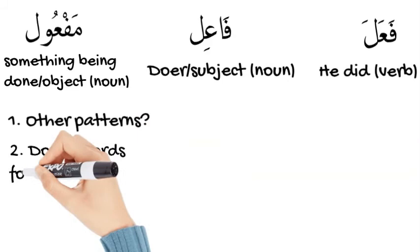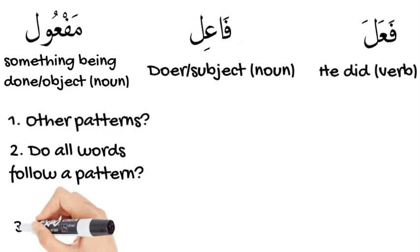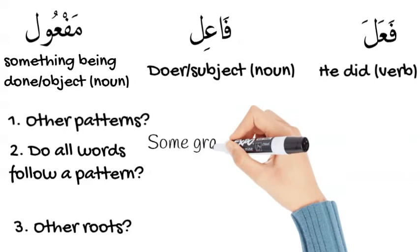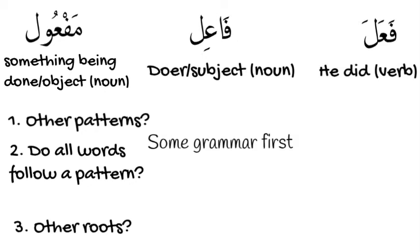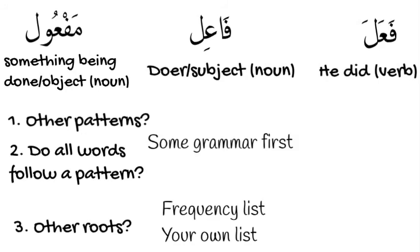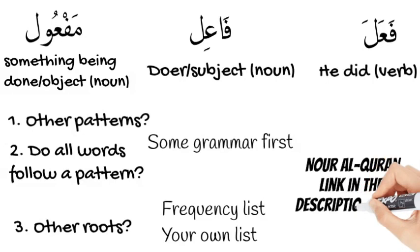The next questions are: what about other patterns in the Quran — how do we learn them? Do all words follow a pattern? What about words made up of only two letters? How do we learn all of these word roots? To answer the first two questions, we need to go over some grammar first, which I will do in the next videos, inshallah. To answer the third question, we need to create some frequency lists, which I highly recommend you start doing on your own. I have a playlist called نور القرآن where I go over the word roots word for word, starting from Surat al-Baqarah. If you follow along this playlist, you should be able to start creating your own list of word roots to help you memorize and learn the most important roots that make up most of the words in the Quran.